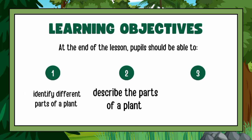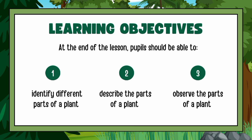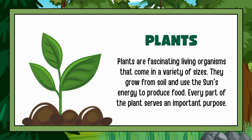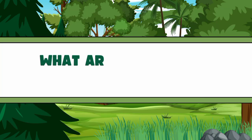From this lesson, you will be able to identify different parts of plants, describe the parts of plants, and observe the parts of plants. Plants are fascinating living organisms that come in a variety of sizes. They grow from soil and use the sun's energy to produce food. Every part of the plant serves an important purpose.